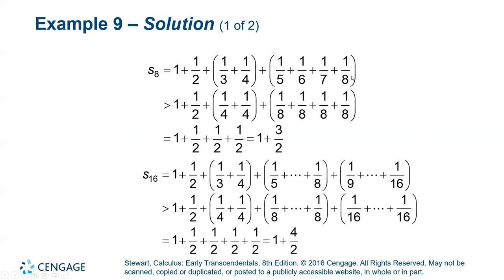S8 is the sum of the first eight terms. And just like in the last one with S4, I can do a comparison where I change both of these to be 1 fourth and all four of these to be 1 eighth, which makes them all smaller, which means S8 is bigger than this value. What is this value? 2 and a half.